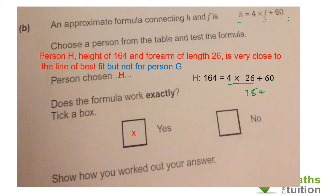It doesn't work for person G because person G has got a height of 118 and a forearm length of 17. Four times 17 is 68, and 68 plus 60 will give us 128. On the right hand side of this equation, the right hand side gives us a value of 128 and on the left hand side 118, so it does not work for G.